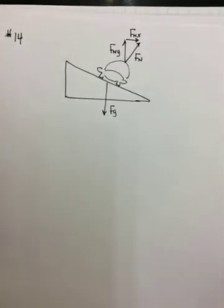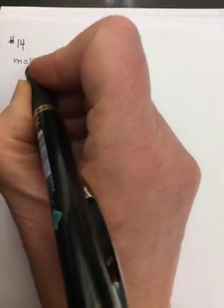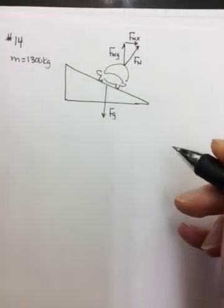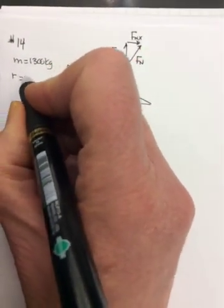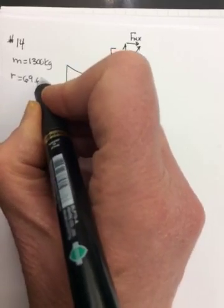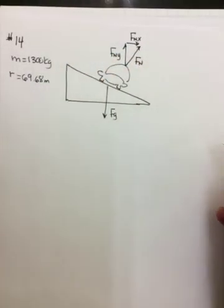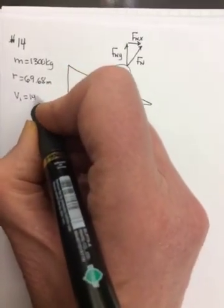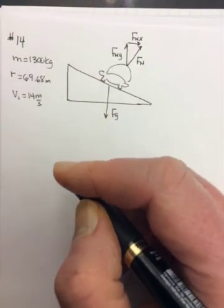Okay, question number 14 tells us that it's a 1,300-kilogram car that's traveling around a curve of radius 69.68 meters, which is perfectly banked for a speed of 14 meters per second, so V1,